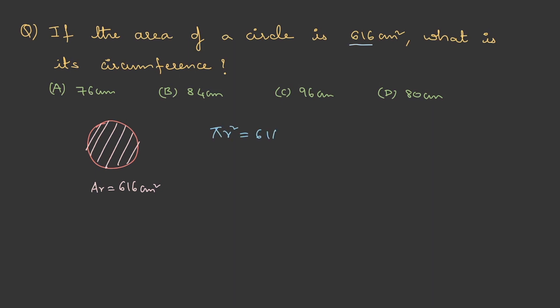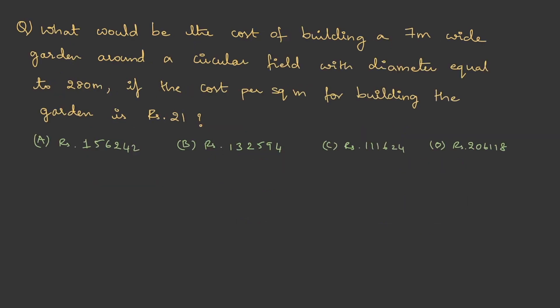Now we're supposed to find the circumference. Circumference C = 2πr. This is 2 × 22/7 × 14, which equals 2 × 22 × 2 = 88 cm.